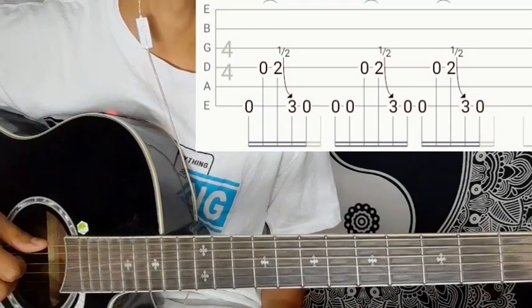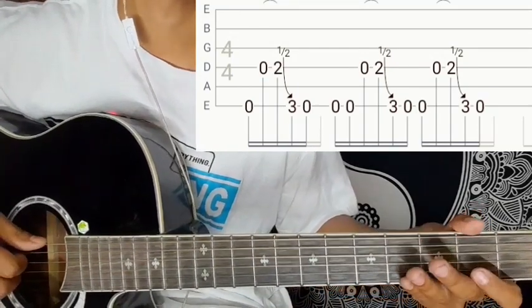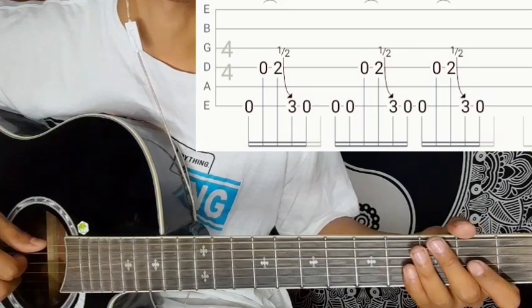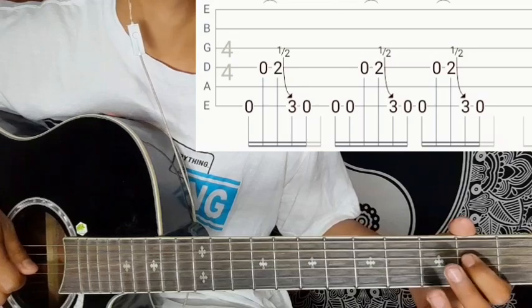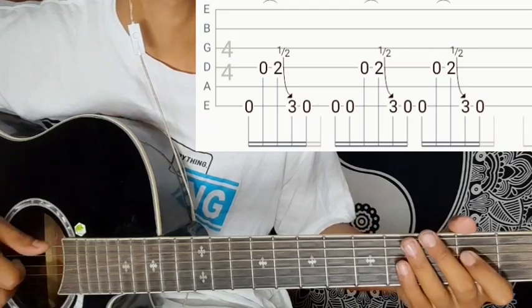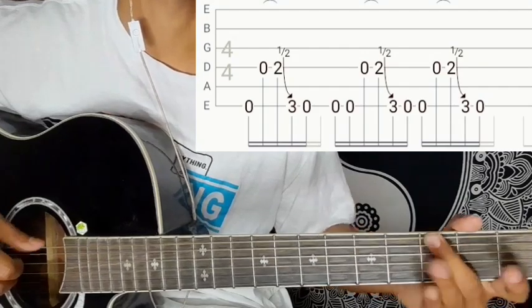Start with sixth string open. Then fourth string open with a hammer-on to second fret. Then the bending, and third string open.